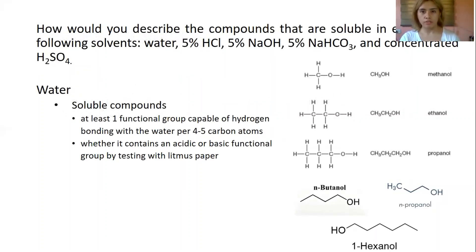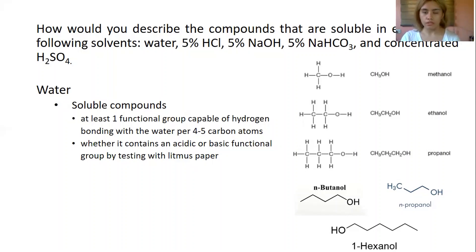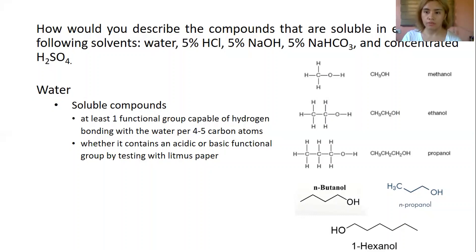To describe compounds soluble in each solvent, we start with water. If the unknown is soluble in water, it suggests at least one functional group capable of hydrogen bonding with water per 4 to 5 carbon atoms. For example, simple alcohols containing 1 to 3 carbons — methanol, ethanol, and propanol — are completely soluble in water. Butanol and pentanol, containing 4 to 5 carbons respectively, are slightly soluble in water.